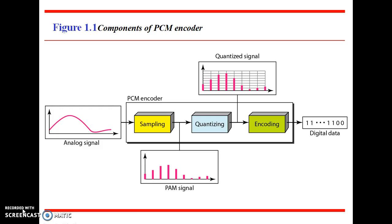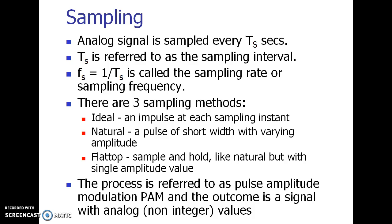In the diagram, we start with an analog signal input. The PCM encoder consists of three main steps, and finally we get digital data at the output. After sampling, note that the time axis is not discrete — we have samples of the analog signal. After quantization, we round off the amplitude of the sample to certain discrete amplitude levels, and depending on the level, we encode into digital data in the form of ones and zeros.